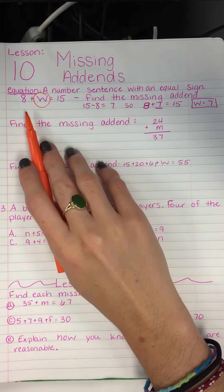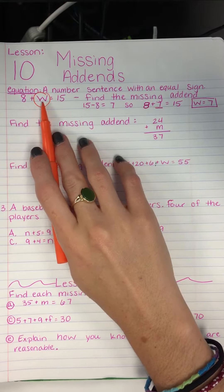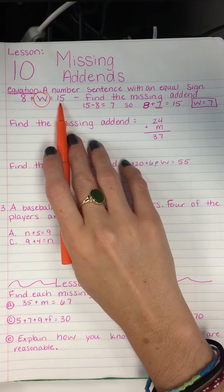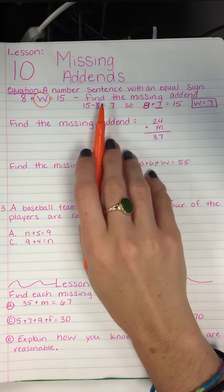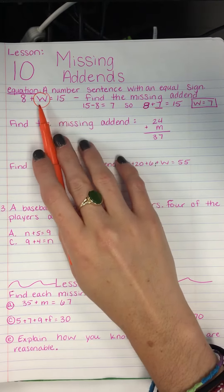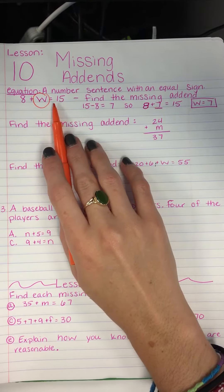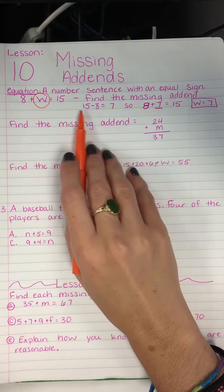We have this equation right here, 8 plus W equals 15, and then it says find the missing addend. And so we are going to remember from fact families that these three numbers, or these two numbers, can give us this third number.